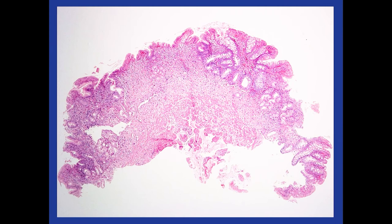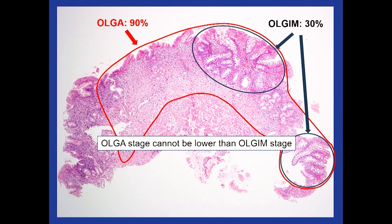I'm going to show you in one single biopsy the big difference between OLGA and OLGIM. This biopsy has extensive atrophy with large loss of glands, and two foci of intestinal metaplasia. If you score this biopsy with the OLGIM system, you can say 30% of the biopsy has metaplasia. If you classify it by the OLGA system, probably 80 or 90% of the normal glands are lost. So it is important to understand this concept, because the OLGA stage cannot be lower than the OLGIM. There are papers that show OLGIM stages 3 or 4 and then OLGA 0 — that's not possible.